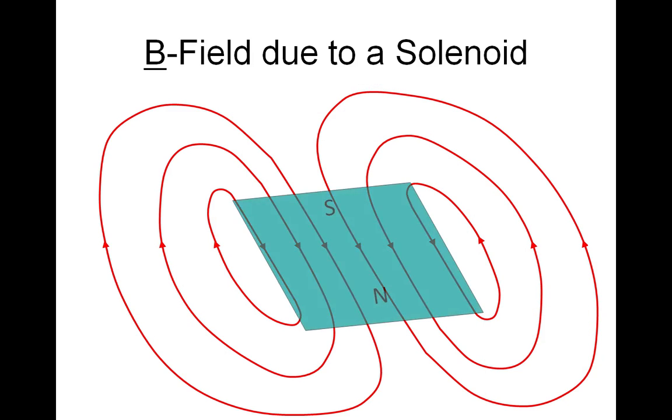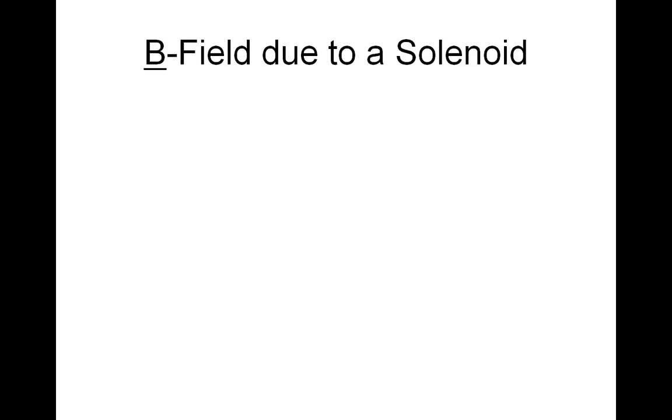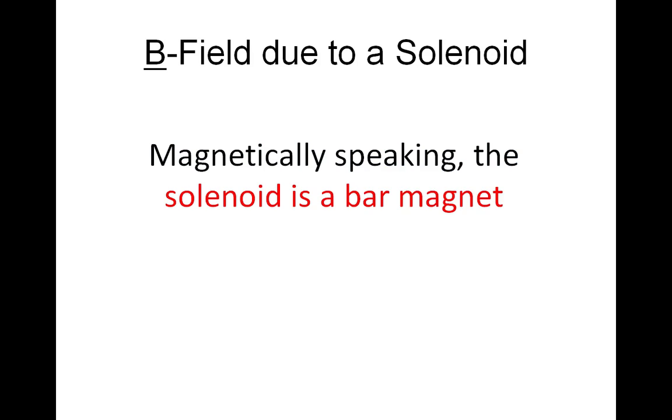If we overlay a magnet on top of this, you'll see that the field is actually identical to a bar magnet. What this means is that magnetically speaking, the solenoid is a bar magnet. Because it has exactly the same shape field, it behaves in exactly the same way as a bar magnet will behave.